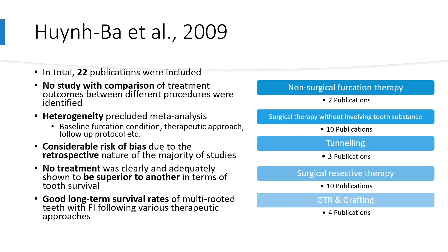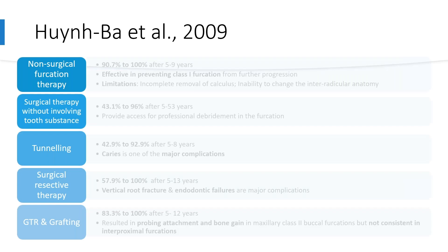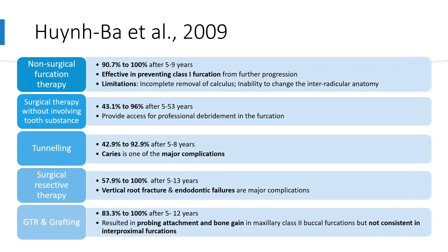In this systematic review, no study compared treatment outcomes between different procedures. Heterogeneity between studies in terms of baseline furcation condition, therapeutic approach, and follow-up protocol precluded meta-analysis. A considerable risk of bias was present owing to the retrospective nature of the majority of the studies. The authors concluded that no treatment was clearly shown to be superior in terms of tooth survival; however, the various therapeutic approaches yielded good long-term survival rates, though these numbers should be interpreted with caution.